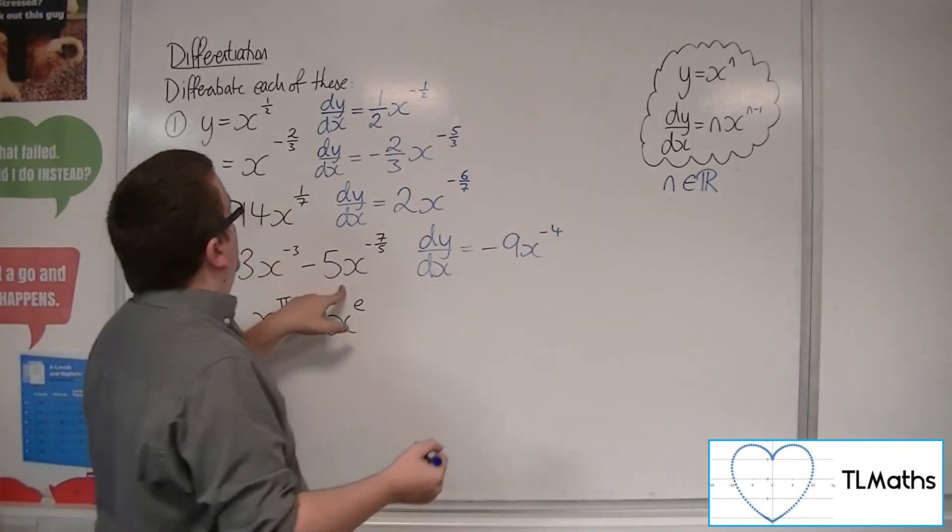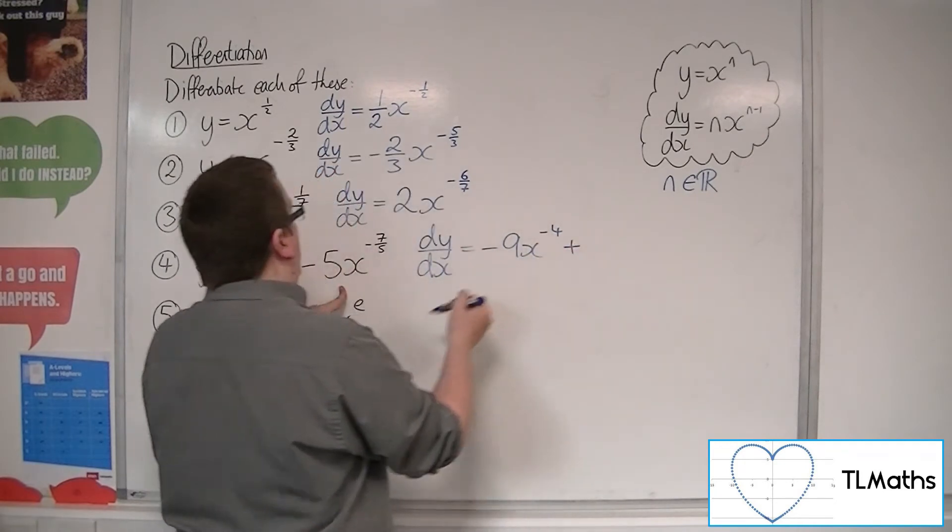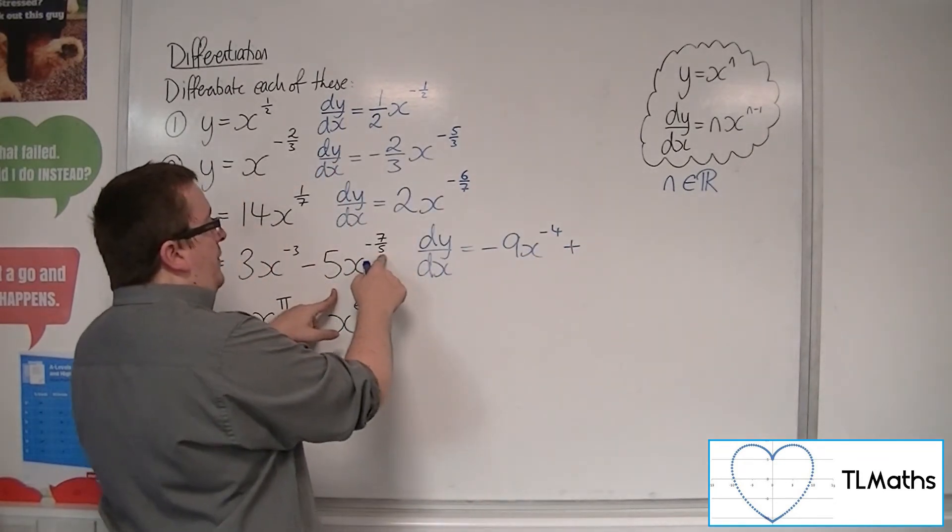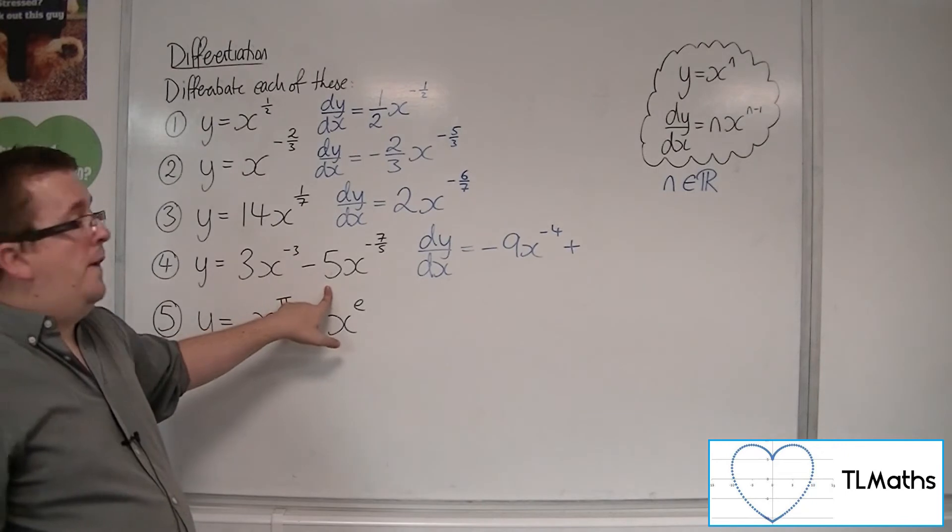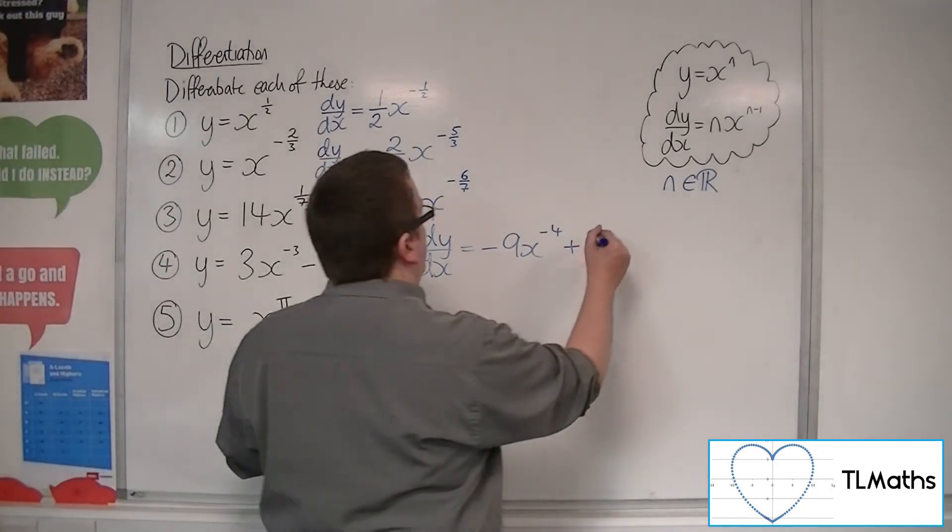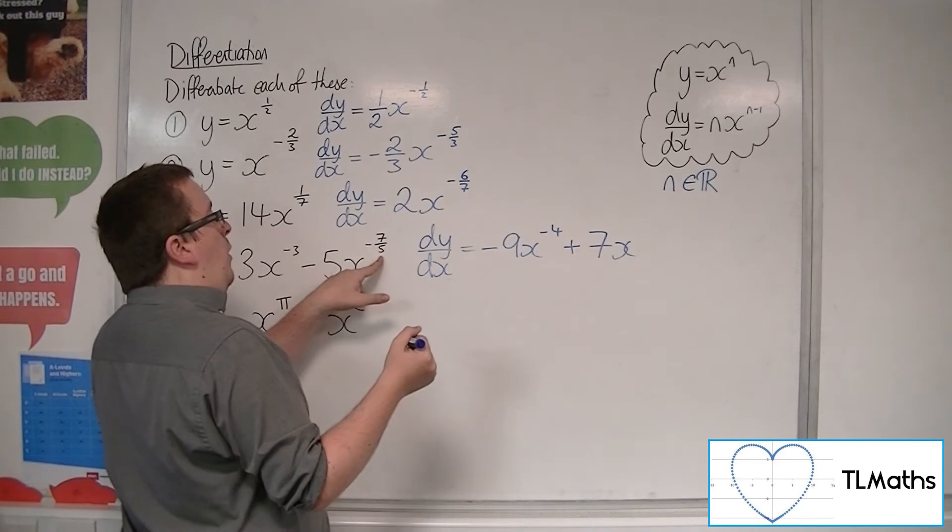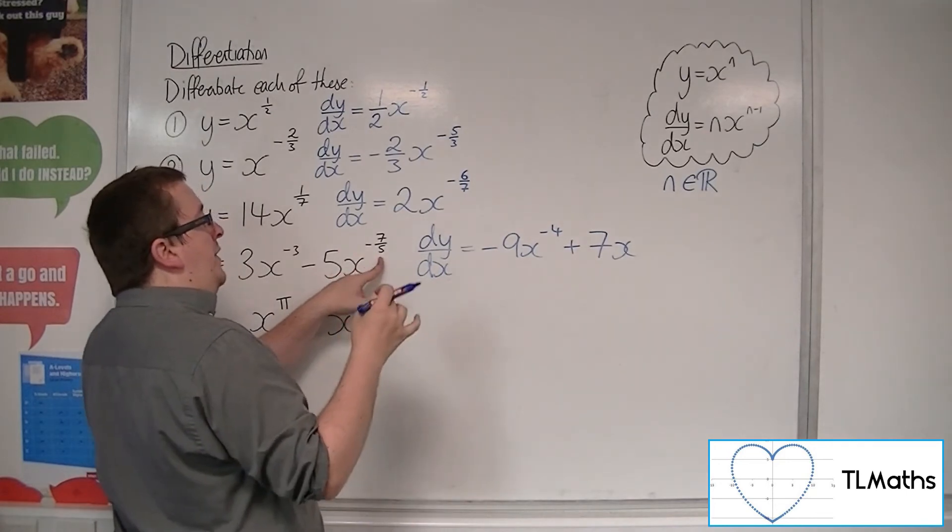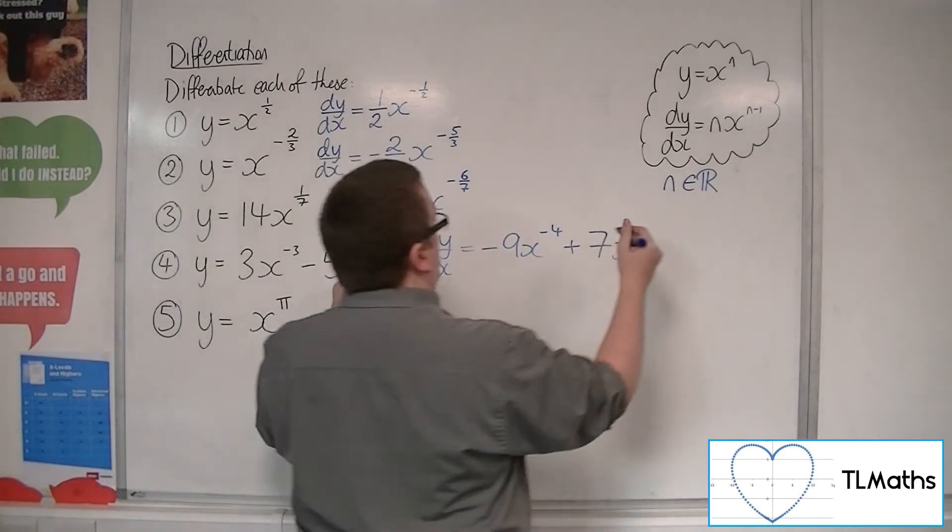Then we've got, take away, well sorry, it'll be a plus because we've got minus 7 fifths multiplying with minus 5. So that'll be plus 7x, and then take 1 off the power. Minus 7 fifths take away 5 fifths is minus 12 fifths.